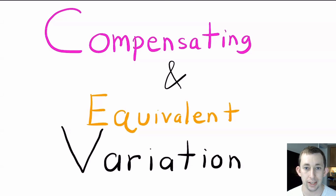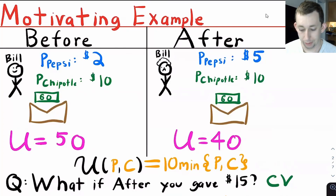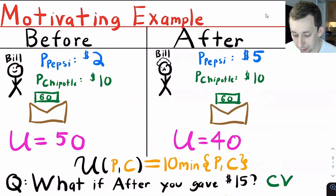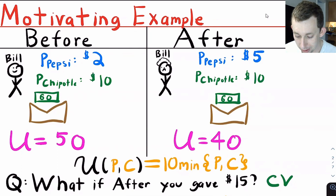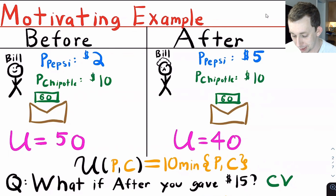Let's get started with a motivating example for compensating and equivalent variation. We have Bill. Bill likes Pepsi and Chipotle, and right now we're going to say that Bill likes to consume Pepsi and Chipotle together in fixed amounts. We call that perfect complements.